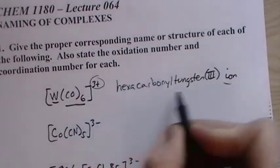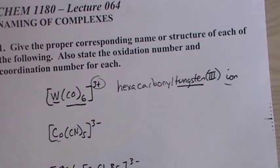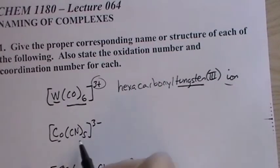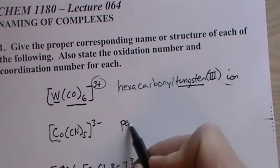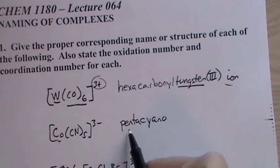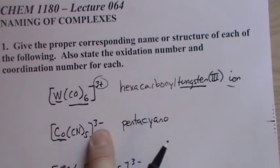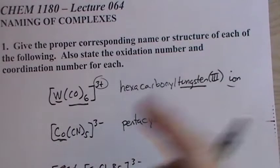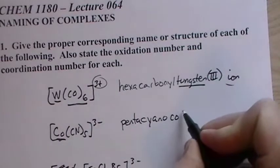Now we have an anion. So this is a cation, we leave the metal name alone. But when the metal is part of an anion, we have to change this name. But first we name the ligands, and it's five, so we call it pentacyano. Again, there's only one type of ligand here, so nice and easy. Pentacyano. Now this is cobalt. If this was a plus three, then we call it cobalt, just cobalt(III).